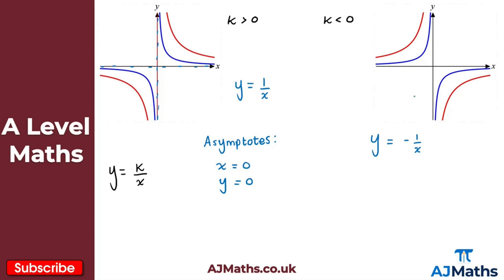The same is true for when K is less than 0 — again, we have asymptotes along the X-axis and along the Y-axis. So asymptotes at X equals 0 and Y equals 0. For Y equals minus 1 over X, if you pick an X value, say 1, you get minus 1 over 1, so when X is 1, Y is minus 1. The asymptotes are the same.